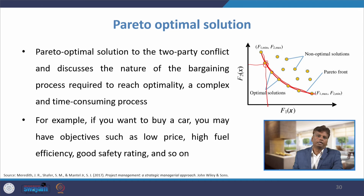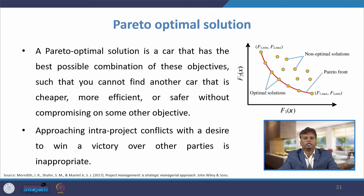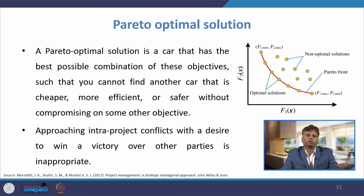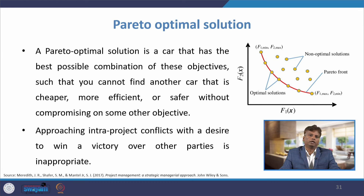For example, if person F1 takes one stand and F2 takes another stand on the Pareto front, then it is beneficial for both persons. If you go outside or inside this curve, there is a loss for one person. For instance, if you want to buy a car, you may have objectives such as low price, high fuel efficiency, and good safety rating. A Pareto-optimal solution is a car with the best possible combination of these objectives such that you cannot find another car that is cheaper, more efficient, or safer without compromising on some other objective. The figure considers only two criteria — criteria 1 and criteria 2 — since more than two criteria cannot be shown in a two-dimensional figure.